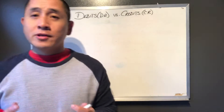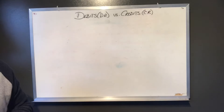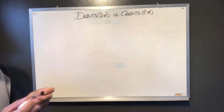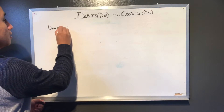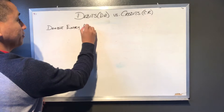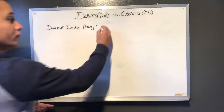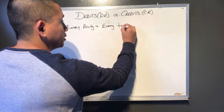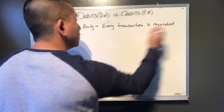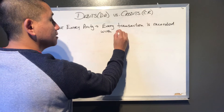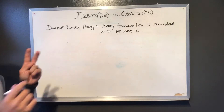Debits versus credits is a means for accountants to keep record and track the way we record different things. If we look at this, we can go back and look at what was double entry accounting and what was the purpose of it. In double entry accounting, every transaction is recorded with at least two accounts.